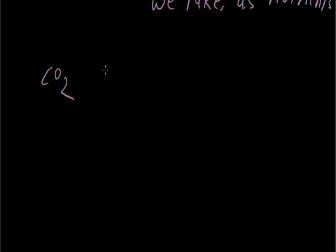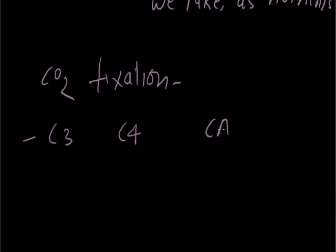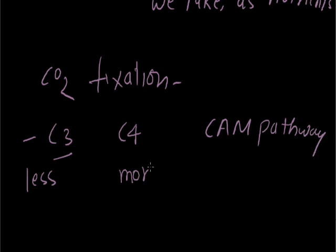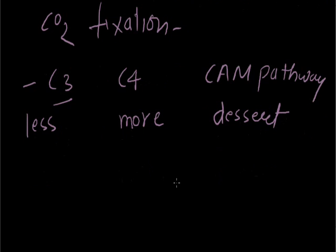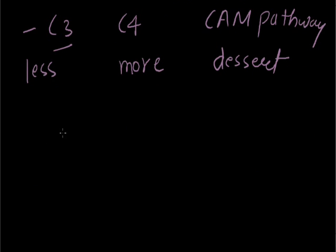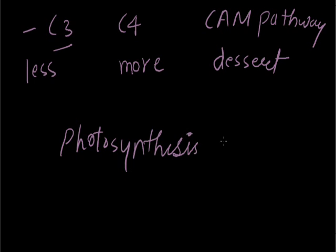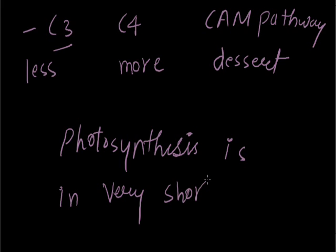Now, this CO2 fixation may be further divided into two categories: it is C3 cycle and it is C4 cycle, and the CAM pathway. C3 is more or less efficient, C4 is more efficient. And it is for C4 — acceleration — it is desert plants mostly. So we have discussed all about, this is brief knowledge about photosynthesis — very short notes. Okay, thank you.